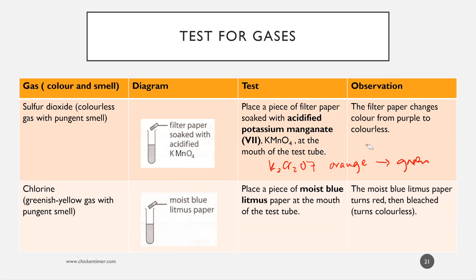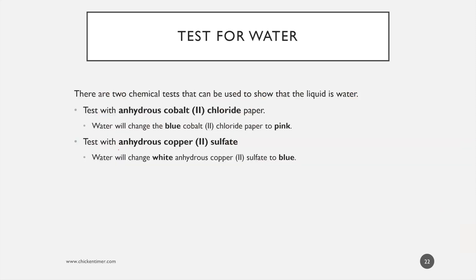Sulfur dioxide has some bleaching properties, but chlorine is the main one that bleaches. For chlorine, you use blue litmus - the blue litmus turns red and then bleaches. You can also use red litmus, where the red litmus remains red first and then bleaches.